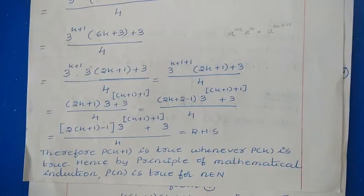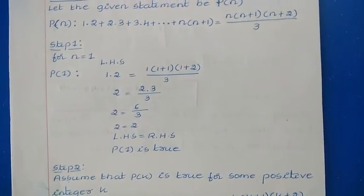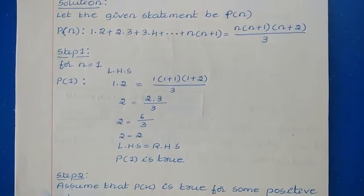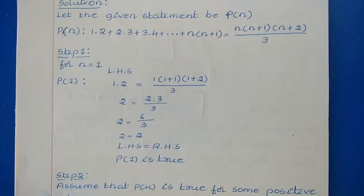Therefore, we can say the entire statement is true for all natural numbers by the principle of mathematical induction. Next, we will discuss the sixth problem. The sixth problem is: 1×2 + 2×3 + 3×4 + ... + n(n+1) = n(n+1)(n+2)/3. Let us take this given statement as P(N).